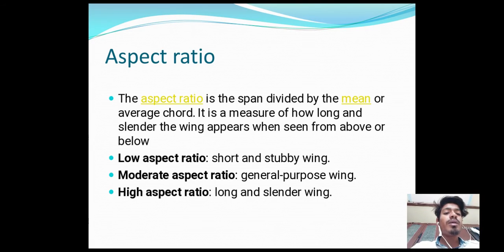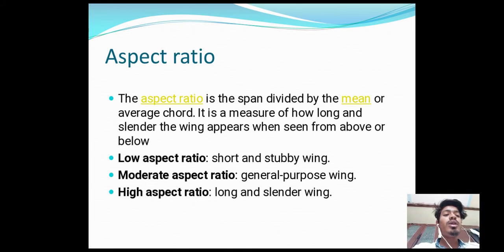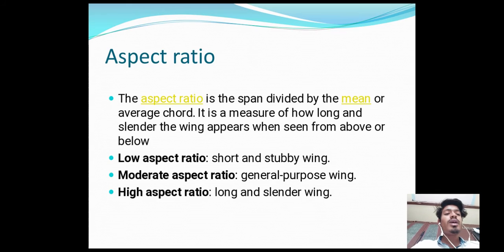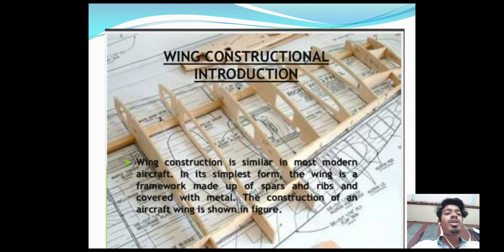A low aspect ratio means a short and stubby wing. A moderate aspect ratio means a general-purpose wing. A high aspect ratio means a long and slender wing. So if we have a low aspect ratio, we have a short and stubby wing; moderate gives a general-purpose wing; and high aspect ratio gives a long and slender wing.